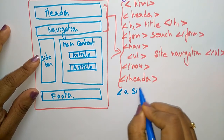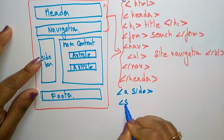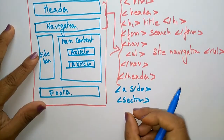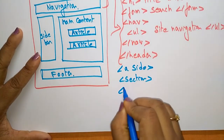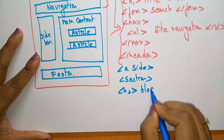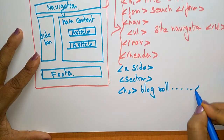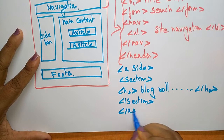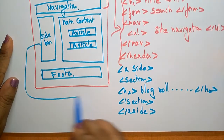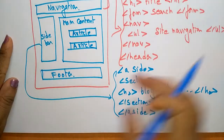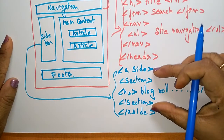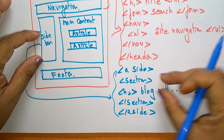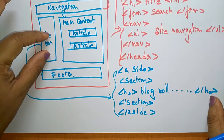For the sidebar, write the aside tag. Inside the aside tag, write a section tag. Add an h2 tag with the heading 'Blog Role', close the heading tag, close the section tag, and close the aside tag. The aside tag on the left-hand side is followed by a section containing the matter that has to appear in the sidebar.